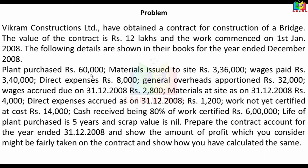Plant purchased Rs. 60,000; material issued at site Rs. 3,36,000; wages paid Rs. 3,40,000; direct expenses Rs. 8,000; general overhead apportioned Rs. 32,000.